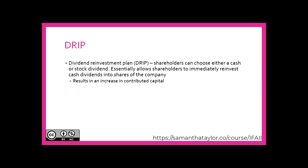Shareholders may choose to participate in a dividend reinvestment plan, otherwise known as a DRIP. This means shareholders can choose between a cash or a stock dividend. Essentially, this allows shareholders to immediately reinvest their cash dividends into shares of the company, resulting in an increase to contributed capital.